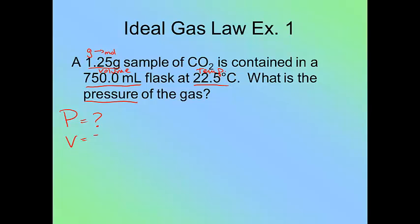They give me a V. They give me grams, which I'm going to turn into moles in a second. R we know is a constant. And I have a temperature. So I can easily see that I'm going to use PV equals nRT here.